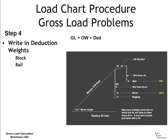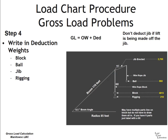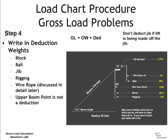Go ahead and write in all your deduction weights. For example: ball 860, jib erected 2,700 — which you have to look up. Remember, don't deduct the jib if the lift is being made off the jib. Only deduct the jib if it's erected and not in use. Rigging: 210 pounds — given in the data table. For the Manitowoc, all wire rope must be deducted, including wire rope off the main boom and off the jib.